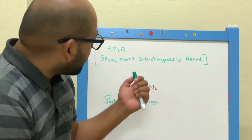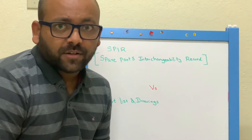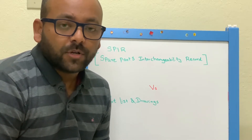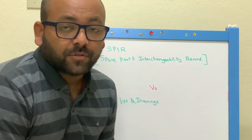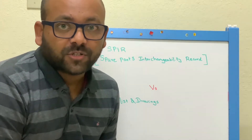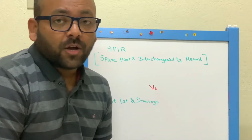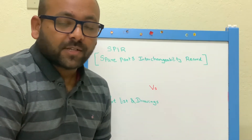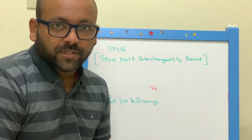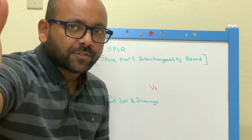Coming to the Spare Parts Interchangeable Records — in my previous video, I explained about the list of documents to be reviewed. I mentioned that SPIR, the Spare Parts Interchangeable Records, should be considered for performing or planning maintenance activities. Keep watching Refresh Engineers videos. Welcome to Refresh Engineers.